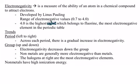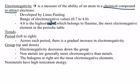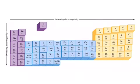Generally, the metals on the left side of the periodic table have low electronegative values, and the non-metals on the right side have the higher electronegative values. Because electronegativity depends on an atom in a chemical compound, the noble gases are not going to be part of this discussion. Normally, noble gases do not make chemical bonds, at least not naturally. Therefore, they do not have electronegative values.